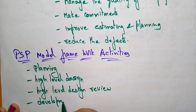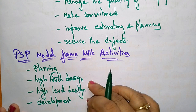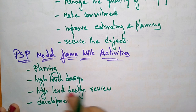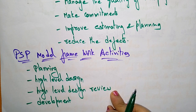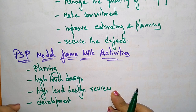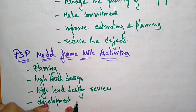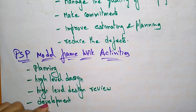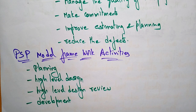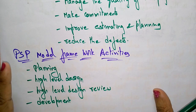After planning, High Level Design, and High Level Design Review, the next stage is Development. In development, metrics are maintained for all important tasks and work results. This includes coding and testing, following defined metrics for all important tasks.